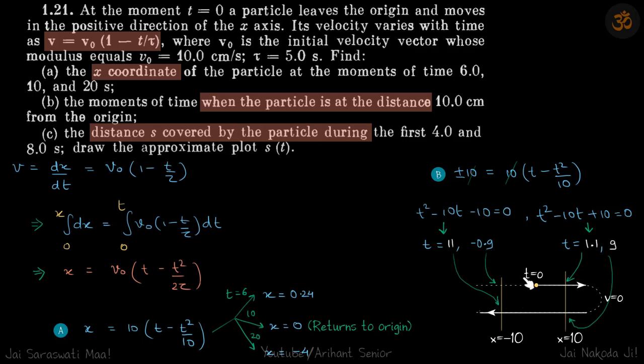This negative value of time means if you go back in time minus 0.9 seconds, then this particle would have been here. So that's why we got one result with a minus sign. Otherwise, it just goes forward and comes back, so it hits plus 10 and minus 10 both two times.